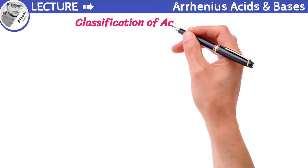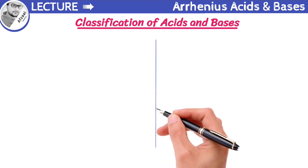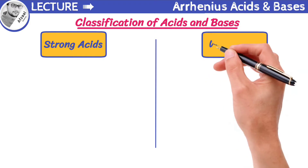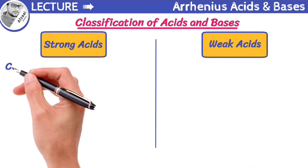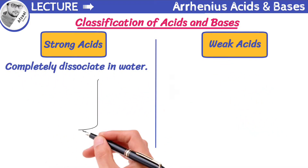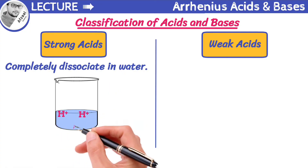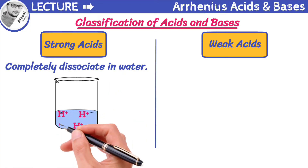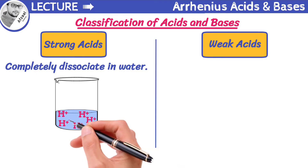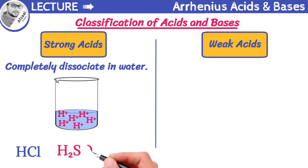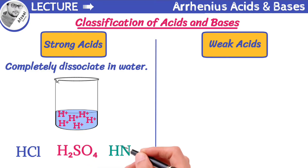Arrhenius classified acids and bases. The acids are classified into strong and weak acids. Strong acids completely dissociate in water, meaning they break apart into hydrogen ions, resulting in a high concentration of hydrogen ions. Some examples of strong acids include hydrochloric acid, sulfuric acid, and nitric acid. Remember, strong acids can cause severe damage if not handled with care.